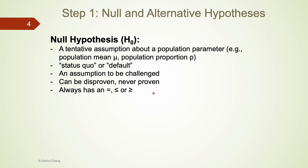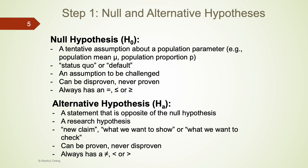The null statement always has an equal sign. It could be either strictly equal, or less than or equal to, or greater than or equal to. The alternative is written as H with subscript A. It is the opposite of H0 — a new claim that we want to prove. We are looking for evidence to prove the alternative HA, meaning reject the null. The alternative hypothesis HA never has an equal sign in it, so it will always be less than, greater than, or not equal to.